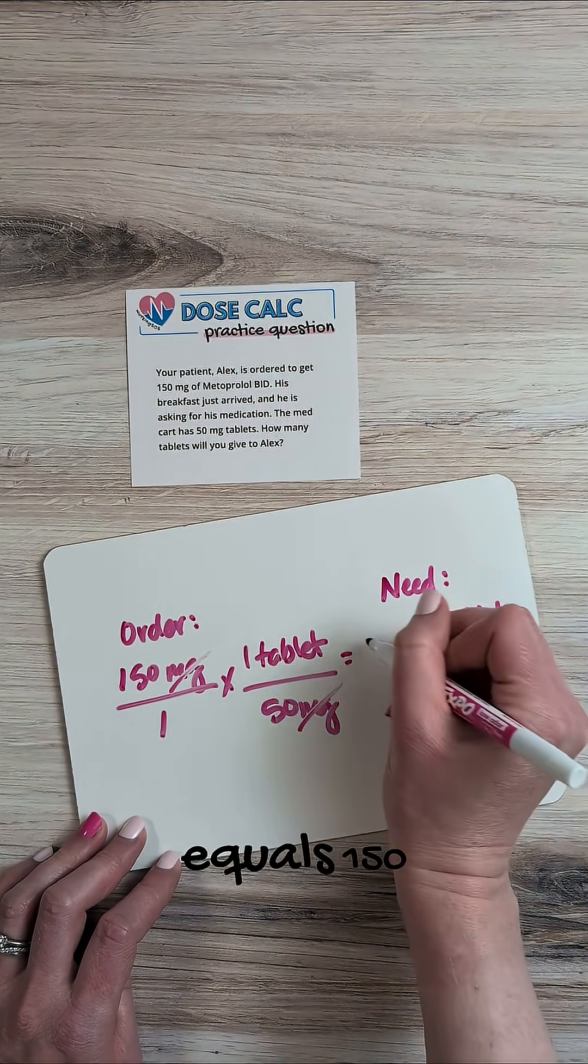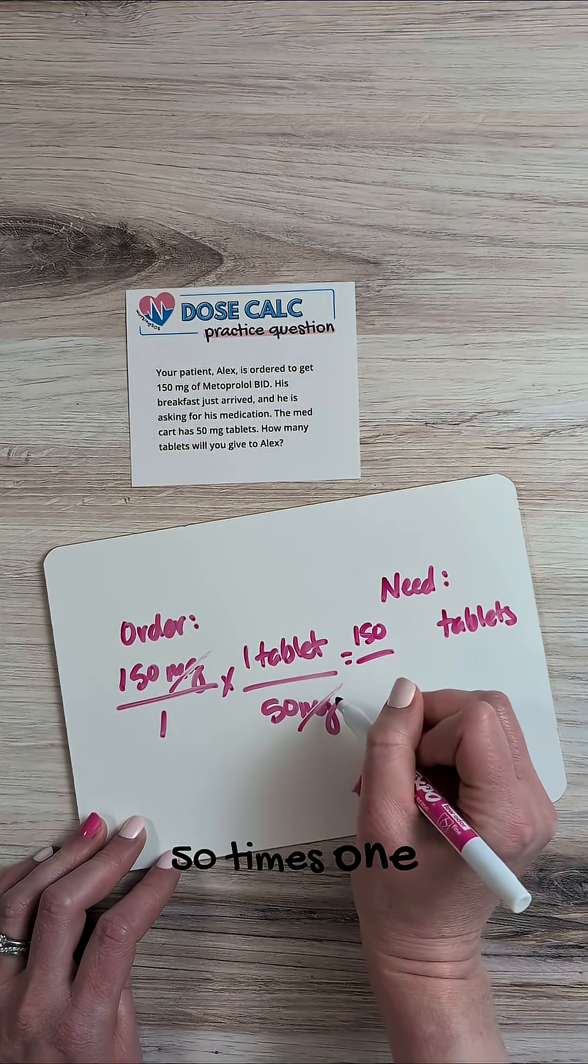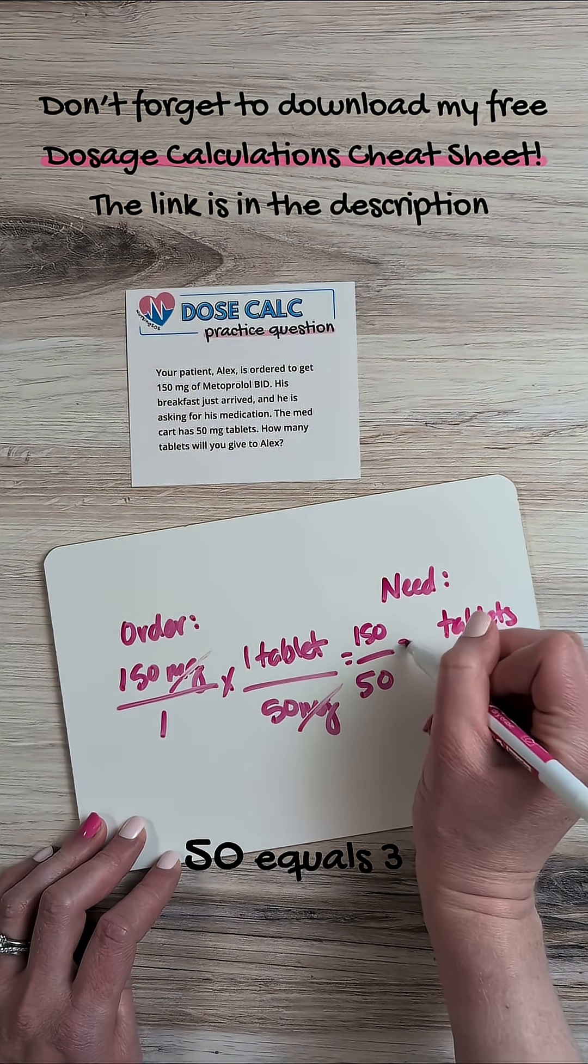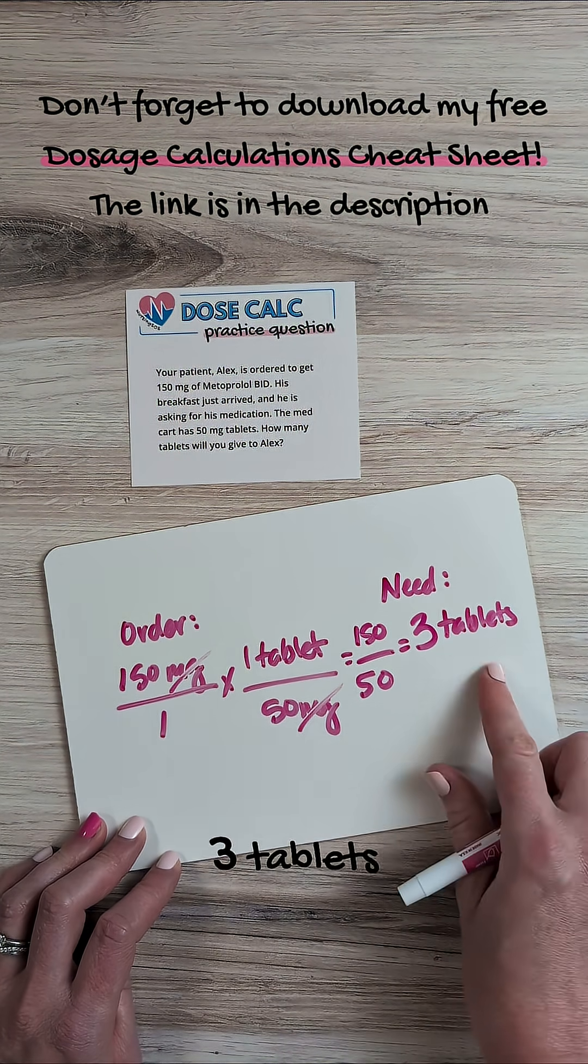So 150 times 1 equals 150, 50 times 1 equals 50, and 150 divided by 50 equals 3. So we're going to give three tablets.